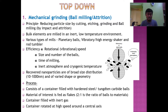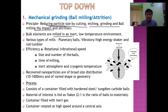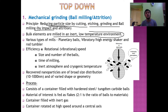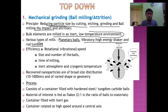The principle of ball milling is reducing the particle size by cutting, etching, grinding, and ball milling — it's a sheer mechanical process. Bigger particles are reduced to smaller particle sizes, and the bulk elements are milled in an inert, low-temperature environment. There are various types of mills through which this process takes place, such as planetary balls, vibratory, high-energy shaker, and rod tumbler.